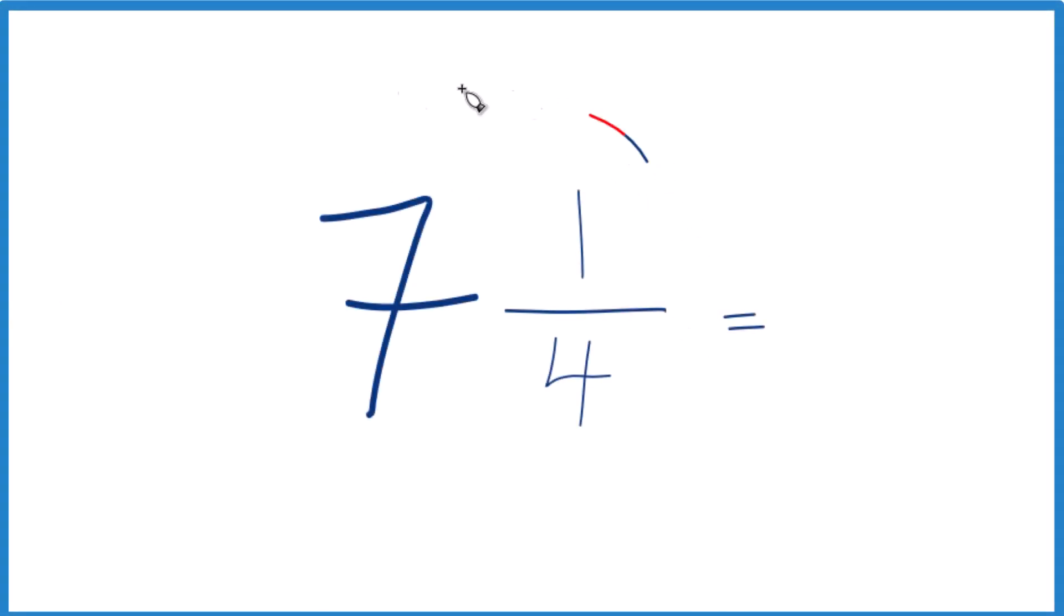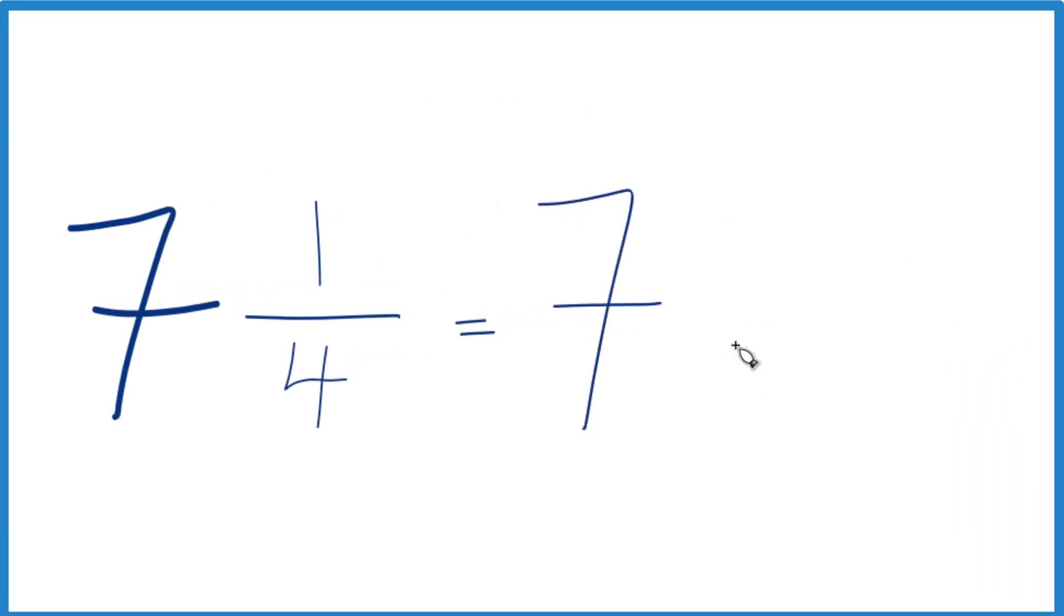All right, let's convert the fraction 7 and 1/4 to a decimal. So to start out, we have 7. That's a whole number, so let's just keep that as 7.